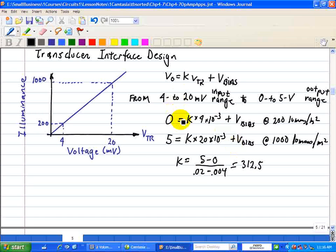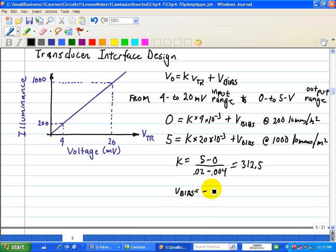Now, taking this K and inserting it into the first equation and solving for the bias, we have V bias is equal to negative 0.004K. K, but K in this case is 312.5, which in this result would be negative 1.25 volts. So, now we have VO right here is equal to 312 for our K, 0.5, multiplied by our transducer voltage minus our bias of 1.25.